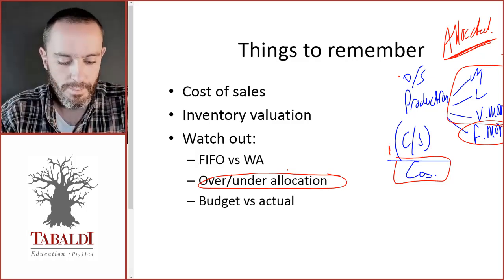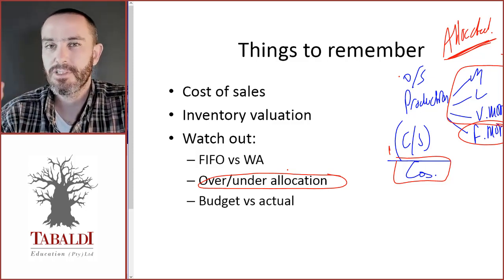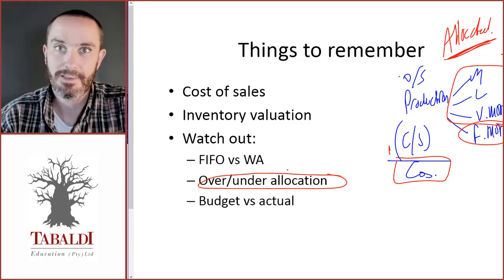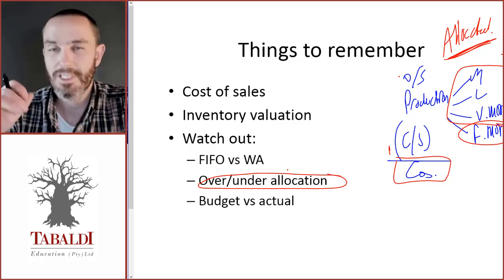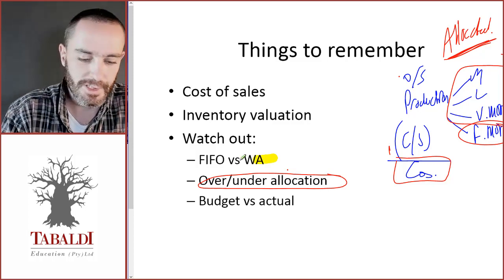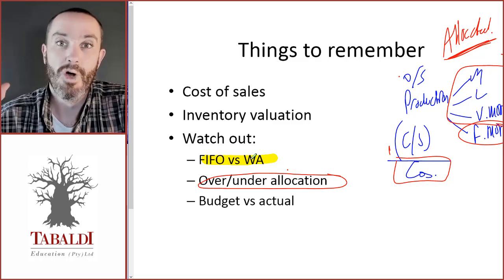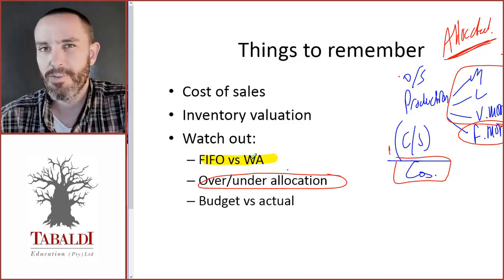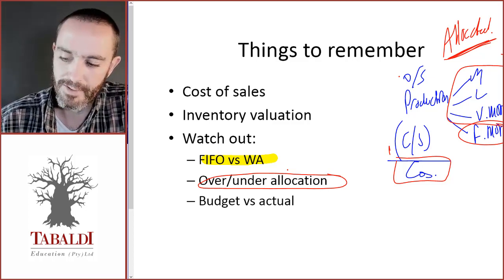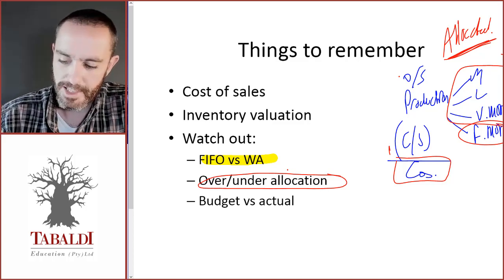Finally, watch out for budget versus actual. If they ask for a budgeted statement of profit or loss, use budgeted figures; if they ask for actual, use actual figures. It's simple but easily overlooked, especially when there's a lot of information. Also watch out for first-in first-out versus weighted average, as that will affect your opening and closing inventory. Usually opening inventory is given as the closing inventory from the previous year, but for closing inventory you need to calculate it correctly.